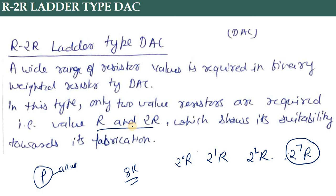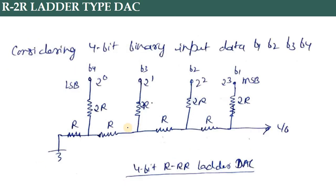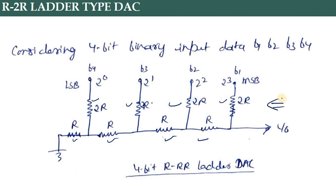In the R2R Ladder DAC, instead of the weighted arrangement where we used 2 raised to the power 0, 1, 2, 3 resistor values, we only use two resistor values: R and 2R. The series resistors are all R, and the parallel shunt resistors are all 2R. Because of this, whenever we calculate the Thevenin resistance RTH from any node, it always comes out to be R.